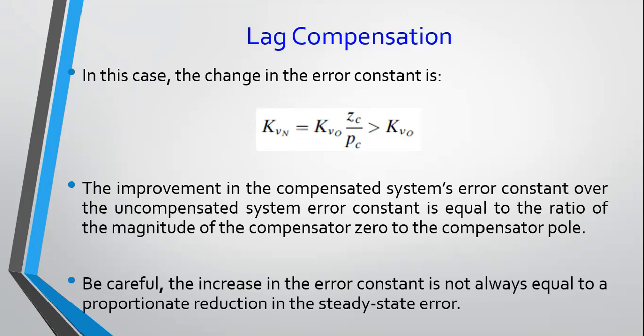Bear in mind that when you talk of the position error constant KP, the steady-state error is 1 over (1 + KP), so it's not exactly inversely proportional. But for the velocity error constant, it's 1 over KV, and for the acceleration error constant, it is 1 over KA — so you would expect these two to be directly inversely proportional to the error constant.